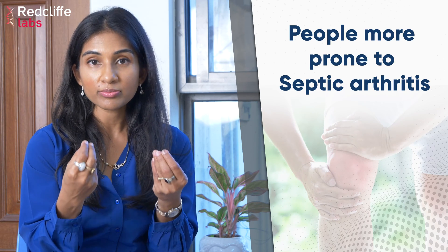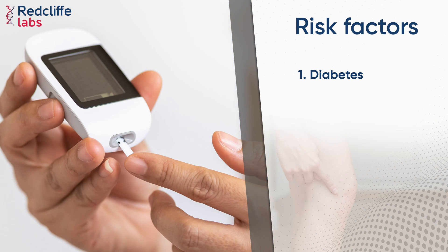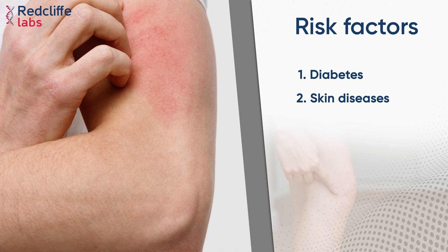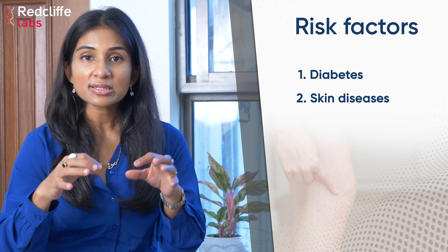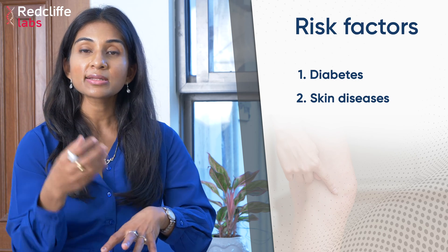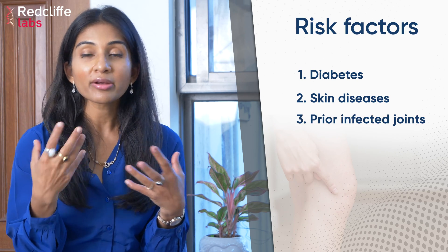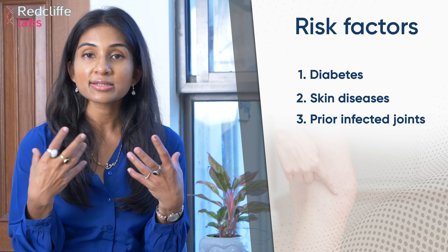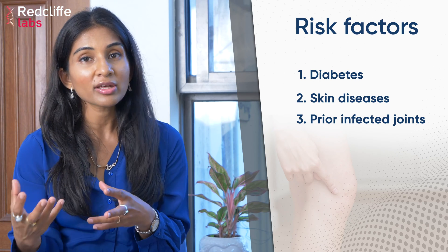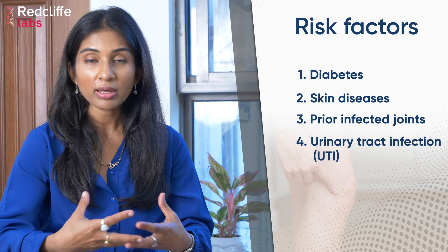Who is more likely to develop septic arthritis? Patients with diabetes have a risk for spontaneous bacteremia. Patients who have skin diseases like psoriasis — because of the breach in the skin, organisms can cause bacteremia and hematogenously seed into a particular joint. Patients who already have an affected joint, like those with rheumatoid arthritis, also have a higher risk.